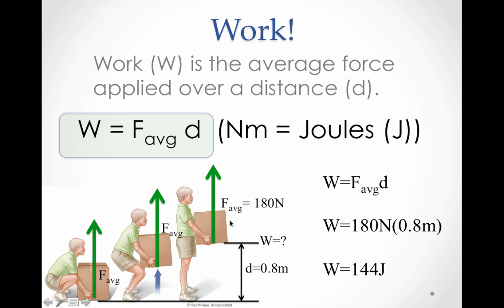So back to work here, if we take our work formula and we know that the weight of the box is 180 Newtons, and this person lifts the box 0.8 meters high, then we can calculate the work done, being the average force through a distance, by multiplying. So if we take 180 Newtons times 0.8 meters, we get 144 joules of work that this person did.